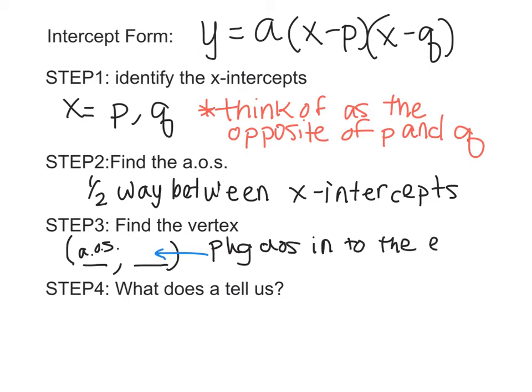We are going to plug our axis of symmetry, AOS, into the equation to find y. We're going to plug it into the equation to find y. That's how we're going to find the y value of our vertex.